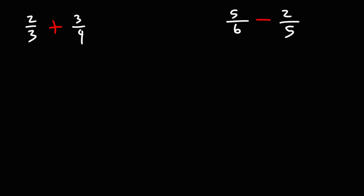When adding or subtracting fractions you need to get common denominators. So we have 2 over 3 plus 3 over 4. To get common denominators I'm going to multiply the first fraction using the denominator of the second, and I'm going to multiply the second fraction using the denominator of the first. This will help me to get common denominators.